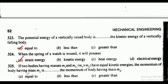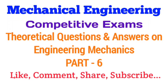Question 325: if two bodies having masses m1 and m2, where m1 is greater than m2, have equal kinetic energies, the momentum of the body having mass m1 is — equal to, less than, or greater than — the momentum of the body having mass m2? The correct answer is option C, that is greater than. This completes the mechanical engineering competitive exams theoretical Q&A series on engineering mechanics. Thank you for watching — like, share, comment, and subscribe.